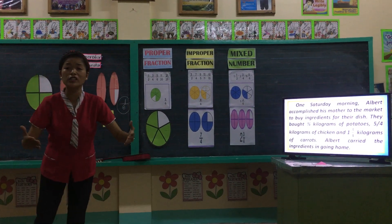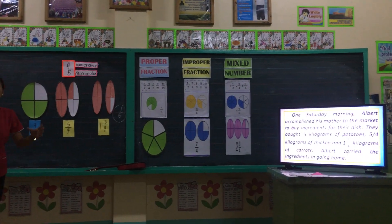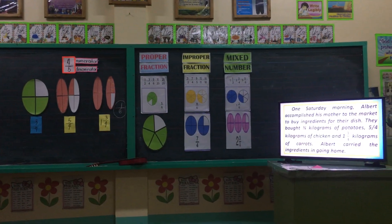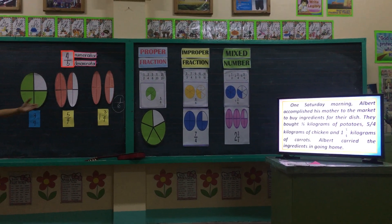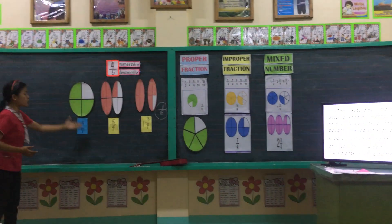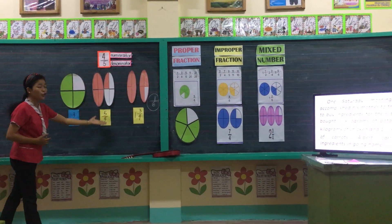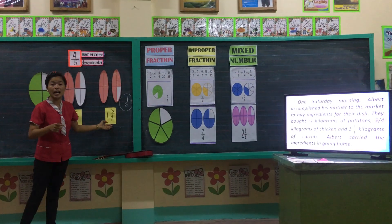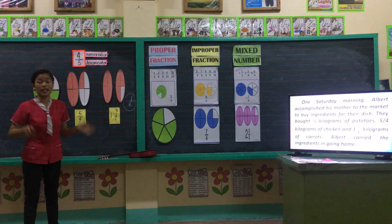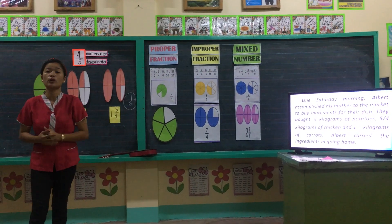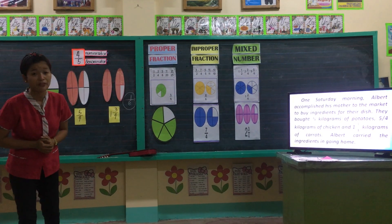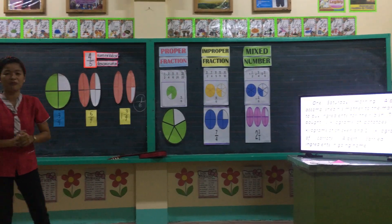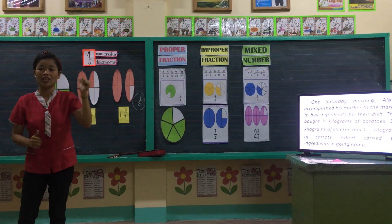What are you going to do? You need to illustrate the fraction from the problem earlier. First group, you have three-fourths. Second group, five-fourths. Third group, you have one and three-fourths. Then choose one member to report afterwards. Is it clear, kids? Okay, very good. Can we start now?